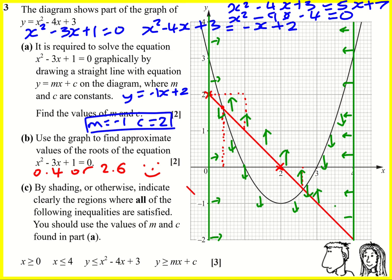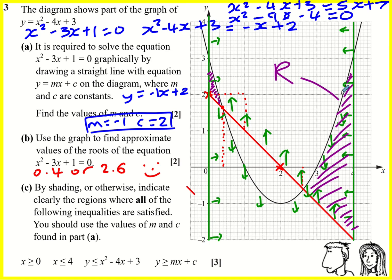If we put that all together that will give us our region. We're going to get this bit here, and there is a little bit here as well — so don't forget about that little sneaky region on the left as well as this larger one on the right. I'll label it R to indicate the region.